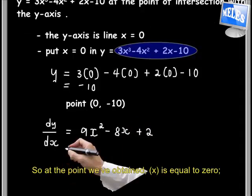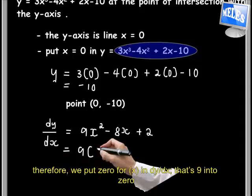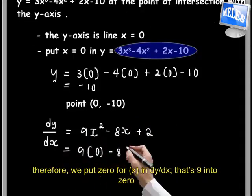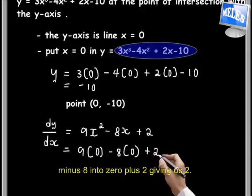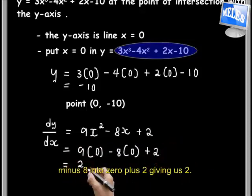At the point we've obtained, x equals 0. Therefore we put 0 for x in dy/dx: that's 9 times 0 minus 8 times 0 plus 2, giving us 2.